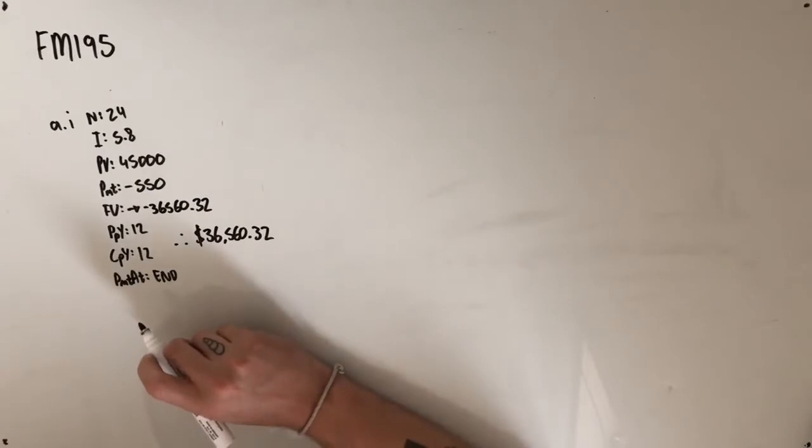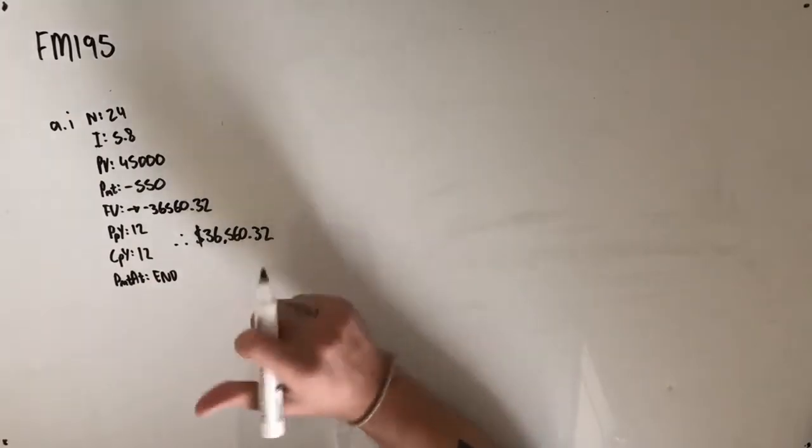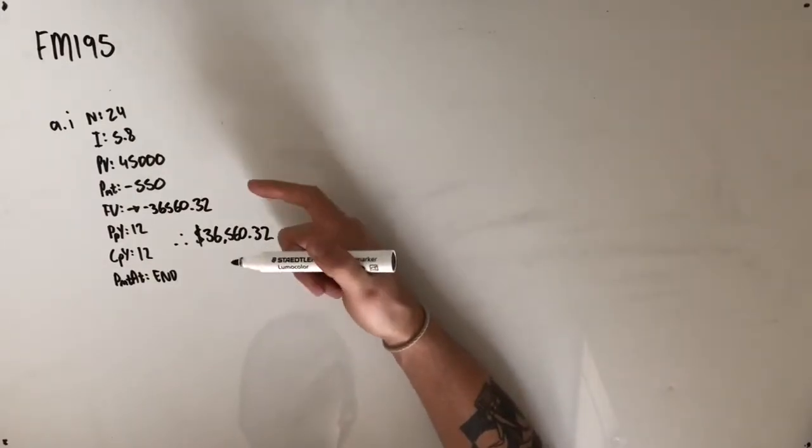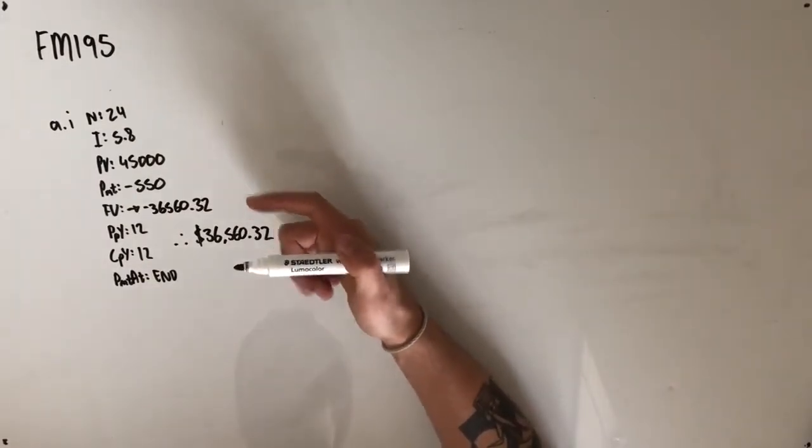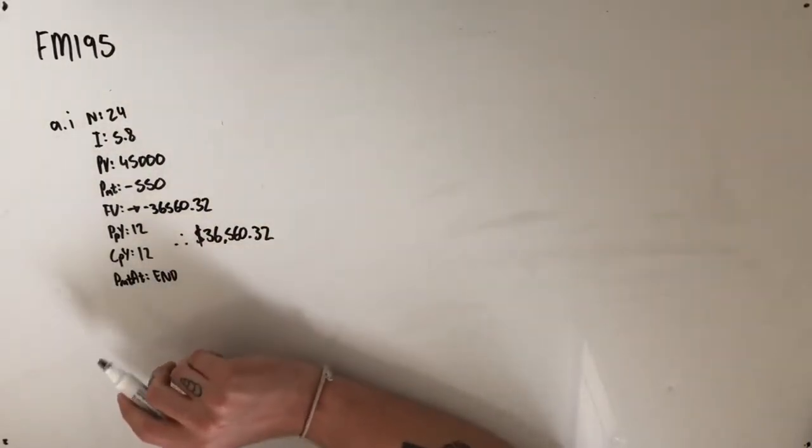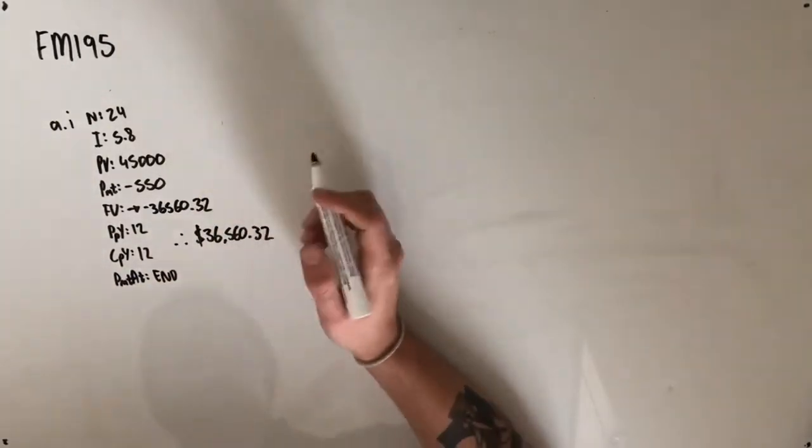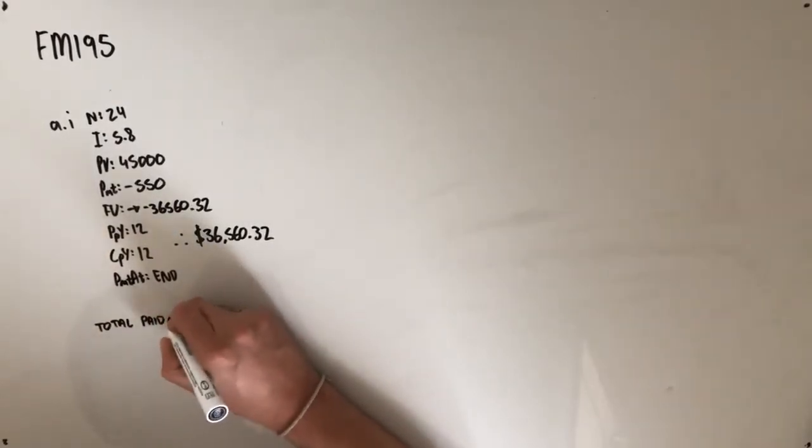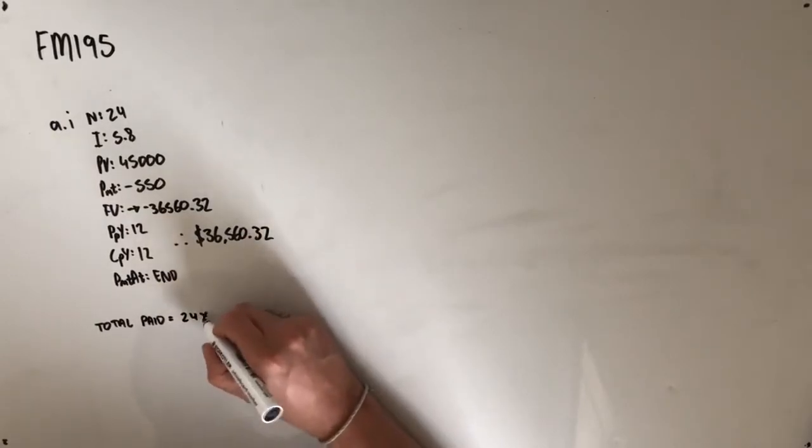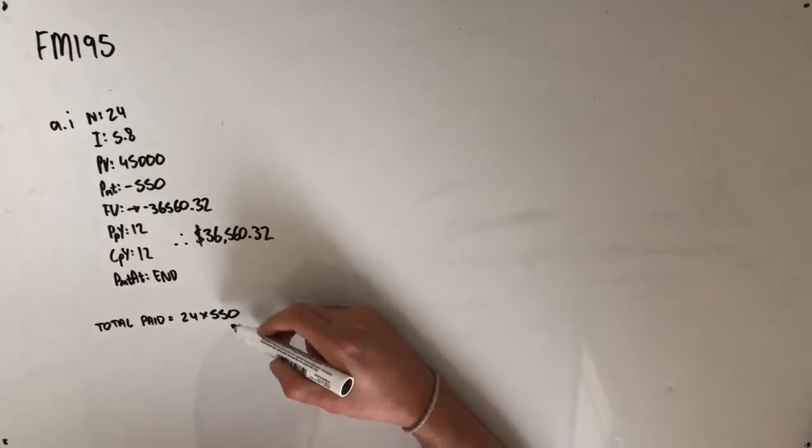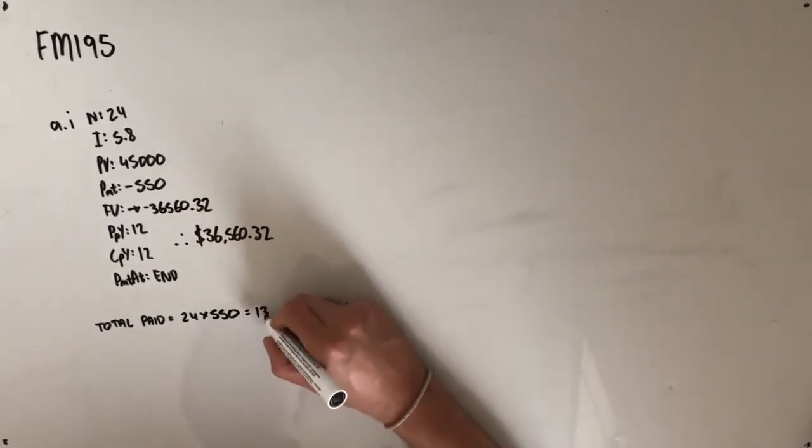So part II says, what is the total interest Sam will have paid after 24 repayments? In order to figure this out, we're going to need to figure out a few things. We're going to have to figure out how much Sam has spent all up, so how much he's actually paid to the bank so far. We're going to have to then find out how much he's reduced his loan by, and then we can find out the total interest by finding the difference. So the total amount that Sam has paid is 24 payments times $550 per payment, so that's $13,200.